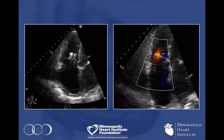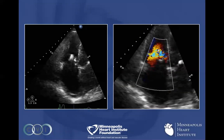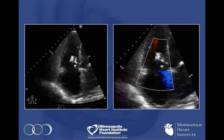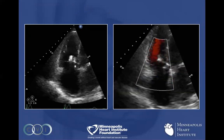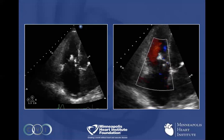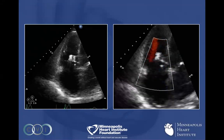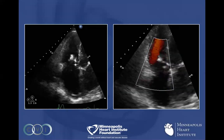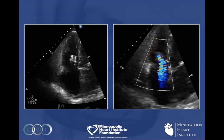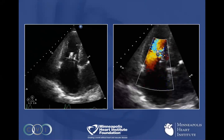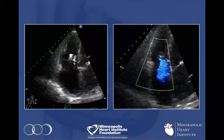Here's the transthoracic echo taken postoperatively. You can see the TR, which was completely torrential, is now mild to moderate. And you can see the two clips intact.